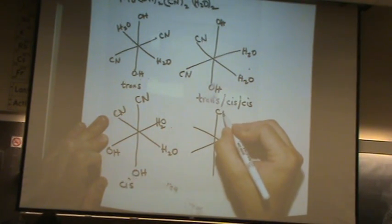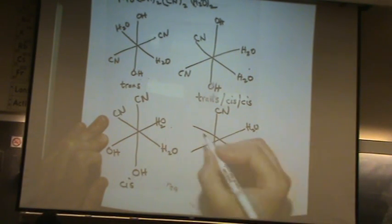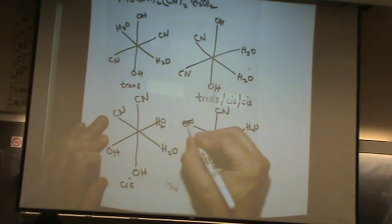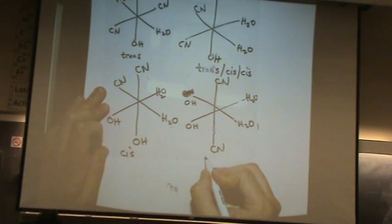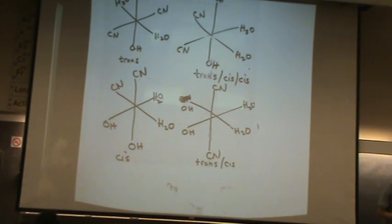Here the hydroxide is trans. I could have made the cyanide trans or the water trans. Let's do that. So now I'm going to make the cyanide trans. This is also a trans, cis, cis mixture. It's got both. I could also make, what's left? The water trans.